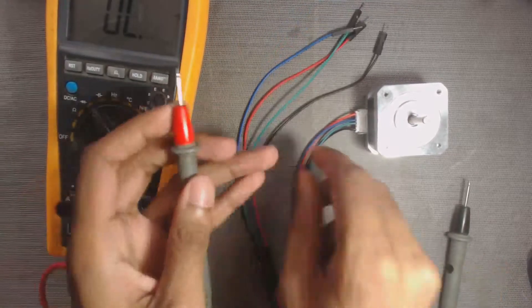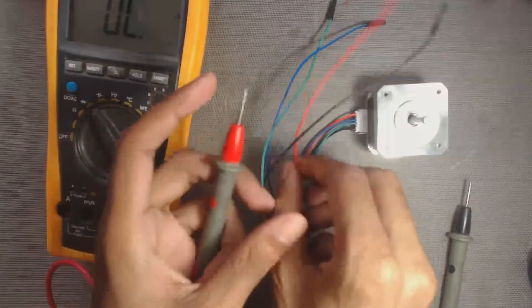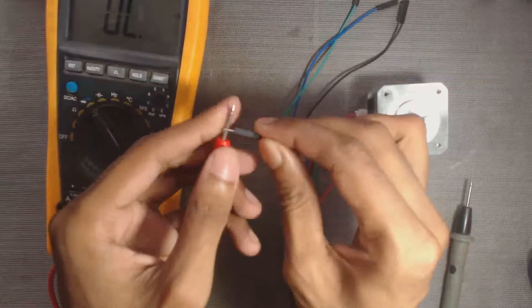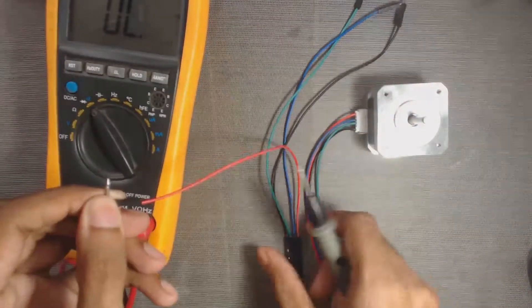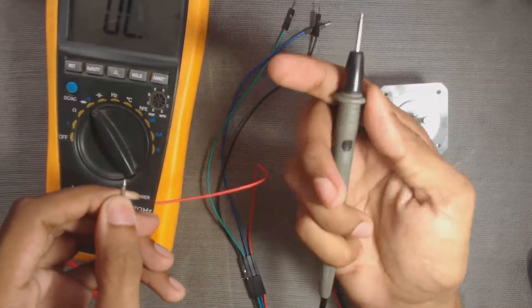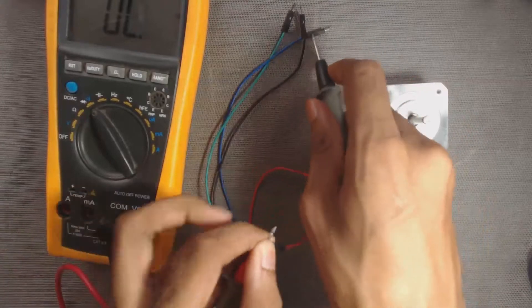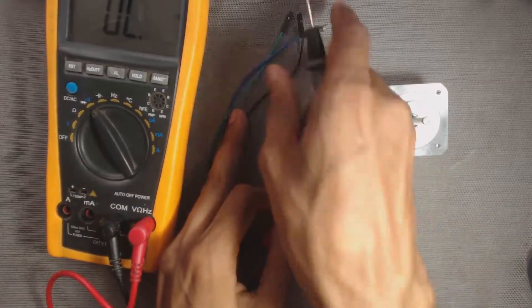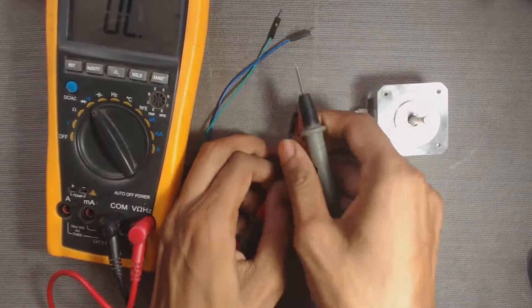Now connect any terminal of the multimeter to any one of the four wires of the motor. Then connect the other terminal of the multimeter to any of the three remaining wires.